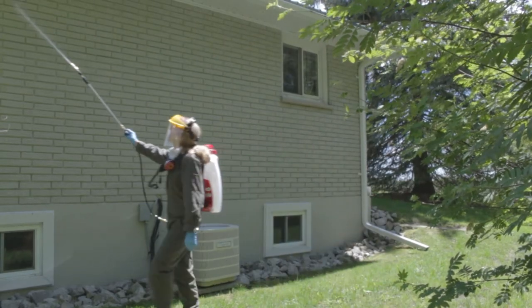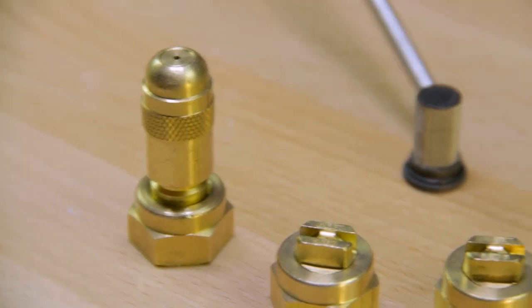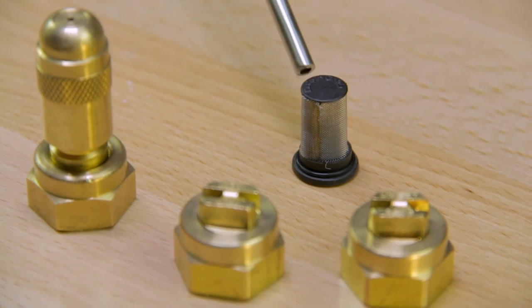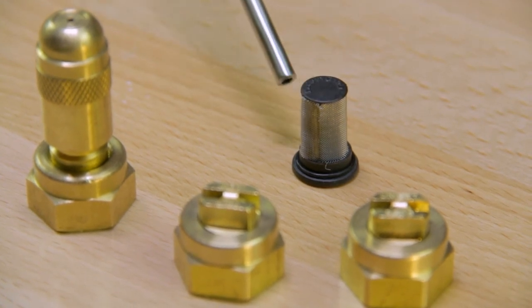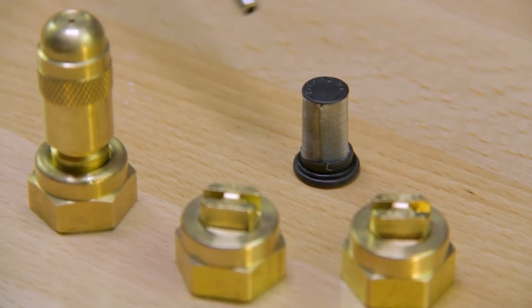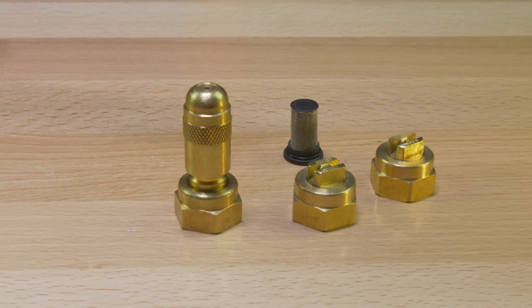And then the last piece we have here is the screen check filter. What this does is helps to reduce run-on and stops the wand or the gun, whichever feature you're using, more quickly.